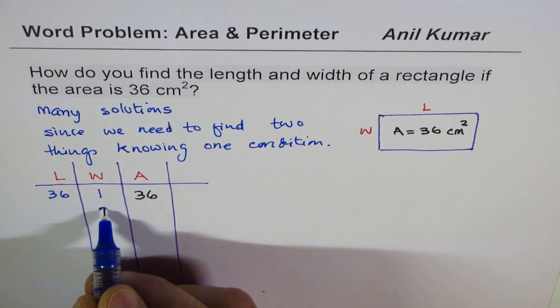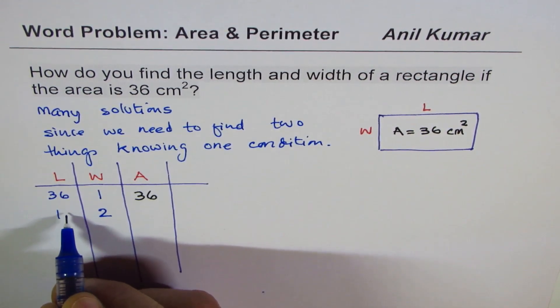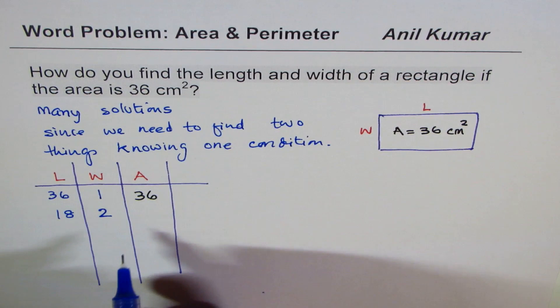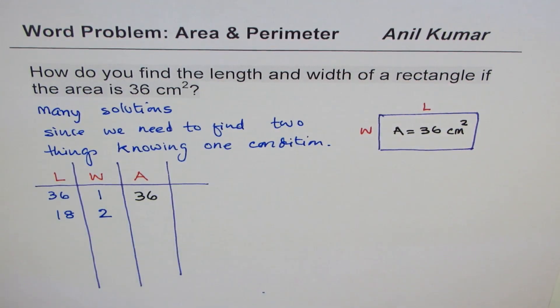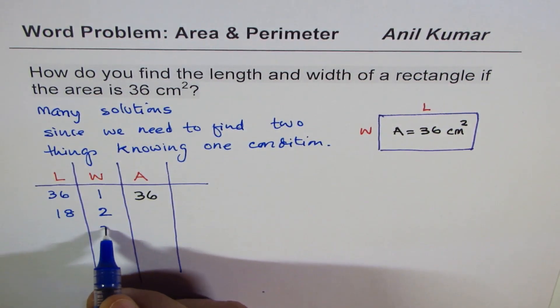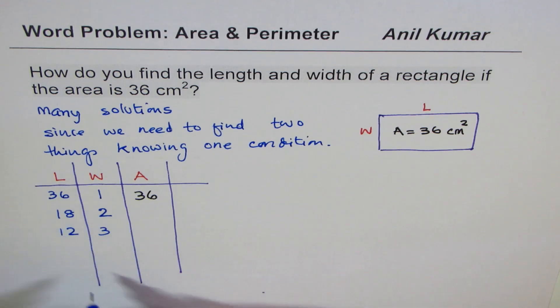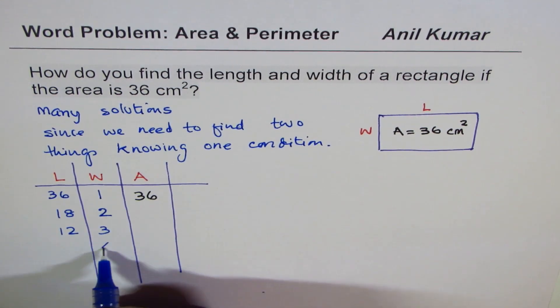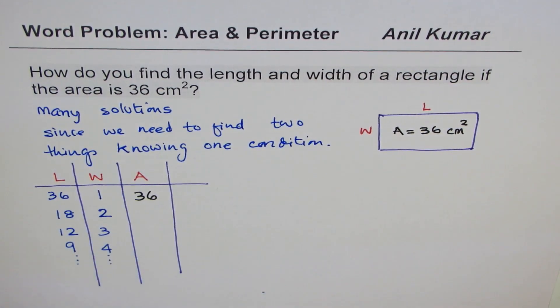Well, if I take width of 2, I could get length of 18. That will also give me area of 36. 3 times 12 is 36. 4 times 9 is 36, and so on. Do you see that? So there are many possibilities.